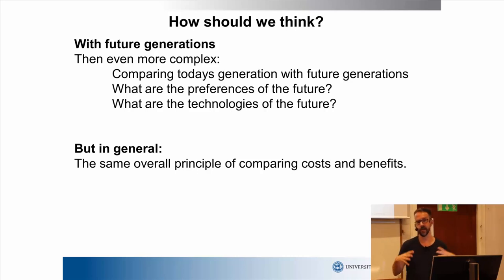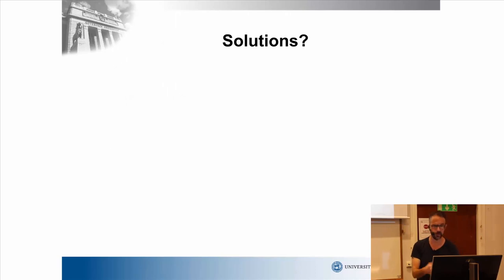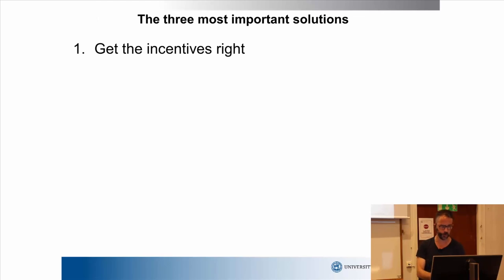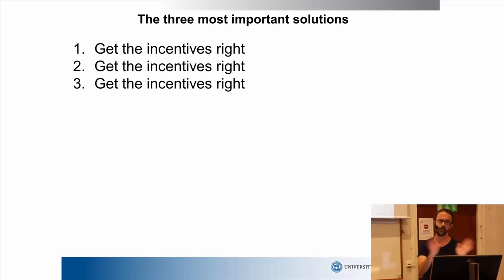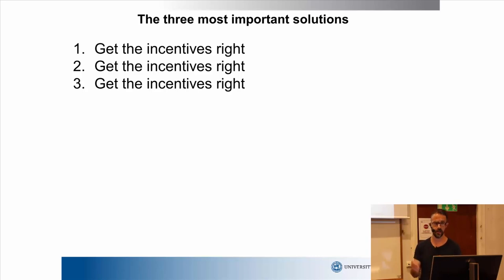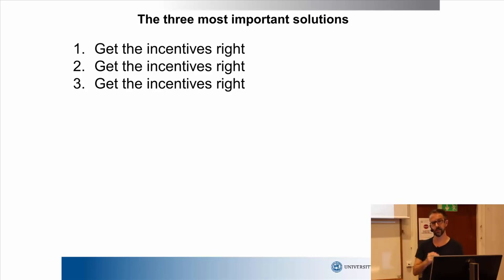Even if it's complicated, the same principle applies: let's compare benefits, compare costs, and decide what to do. I usually say there are three most important solutions, and the first one is to get the incentives right, the second one is to get the incentives right, and the third one is to get the incentives right. By incentives I don't mean money only — people will react to money, to social norms, to quality of life, to what the doctor suggests. In order to affect people's behavior in the right direction, we need to get these incentives right.